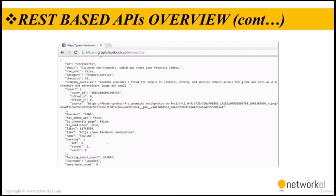Now let's browse graph.facebook.com/YouTube. What we get back is a response to our API request. We have made an API request in our browser to Facebook's Graph API. What we get back might appear to be gibberish to the human eye, but it is actually JavaScript Object Notation, or JSON formatted data.